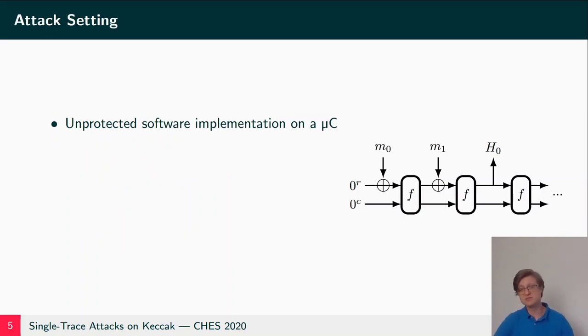Now what does it actually mean to attack Keccak? Well we assume that we work with an unprotected software implementation on a microcontroller. Unprotected since we want to find out if an unprotected implementation can still be attacked with a single trace. We need to have that some part of the input is secret. Unlike AES or any other block cipher where we have a dedicated part input for a secret and a dedicated input for ciphertext or plaintext, Keccak or a hash just has an input.